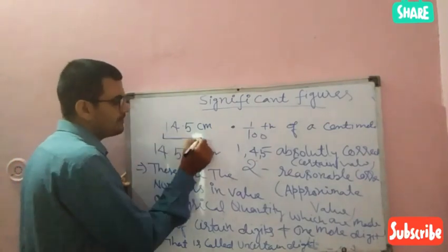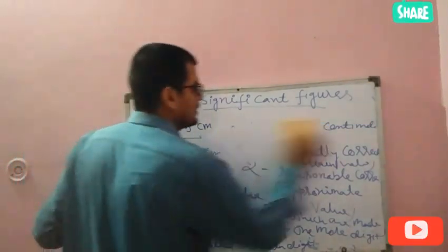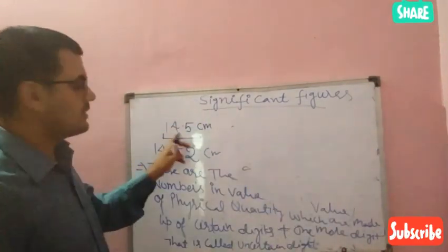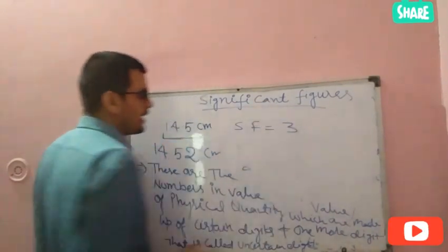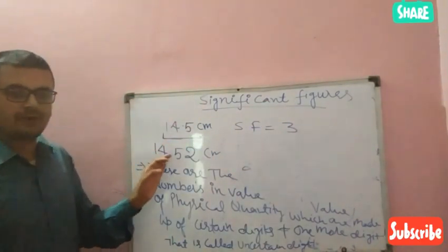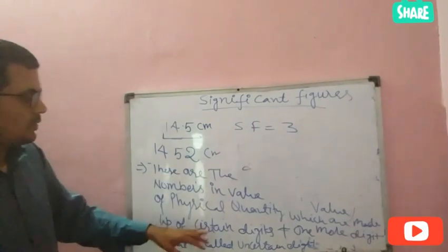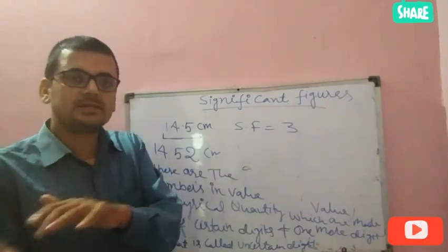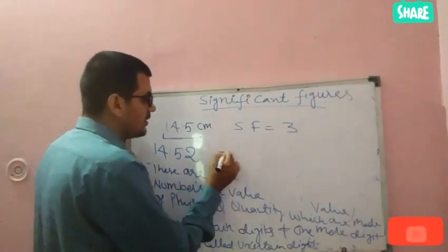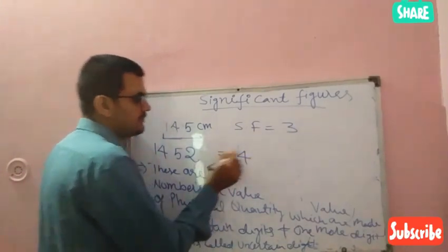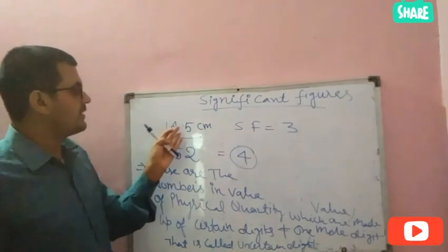What is the significant figure in 14.5? The significant figure is 3 — because 1, 4, and 5 make three digits. Similarly, in 14.52, the certain values are 1, 4, 5 and the uncertain value is 2, so significant figures = 3 + 1 = 4. So, 4 is the significant figure for 14.52 and 3 is the significant figure for 14.5.